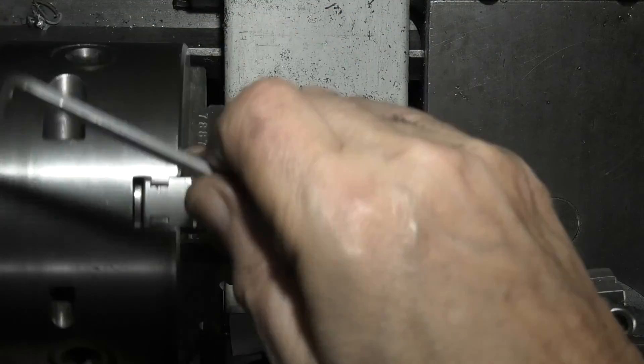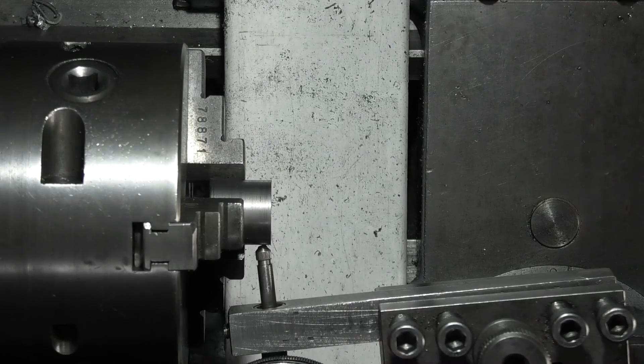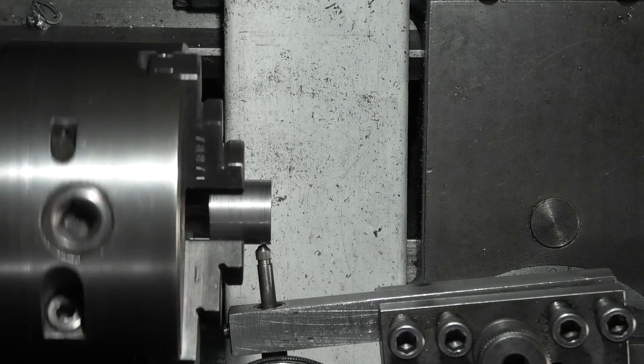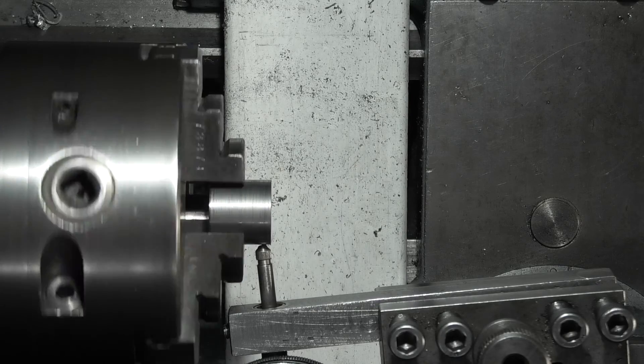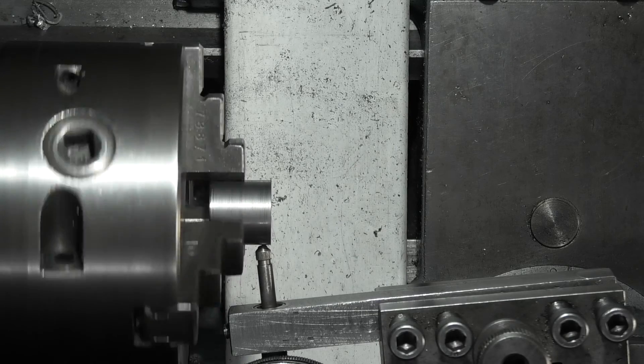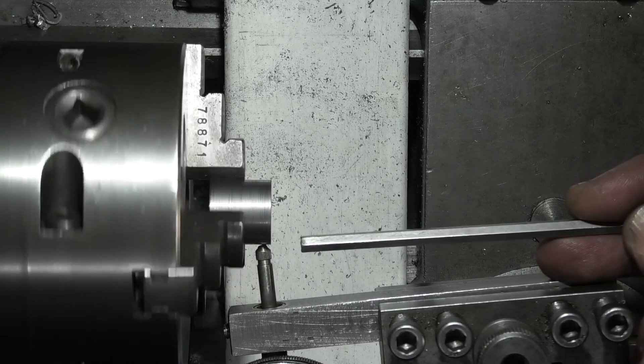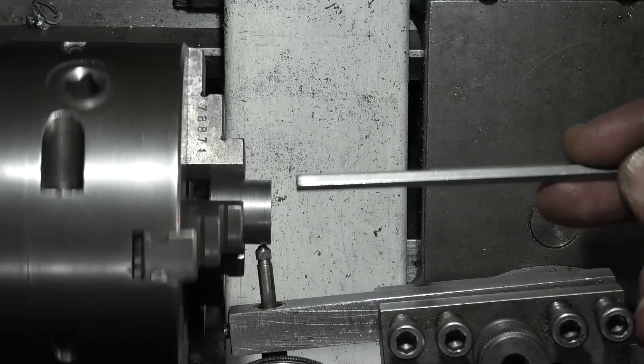So after adjusting some of these screws on the side, I've now got the run out from a few tenths to roughly six thou, so the hole is moving backwards and forwards six thou.